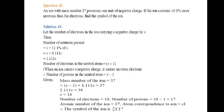The ion contains 11.1 percent more neutrons than electrons. Let the number of electrons in the ion be x. Then the number of neutrons is x plus 11.1 percent of x.